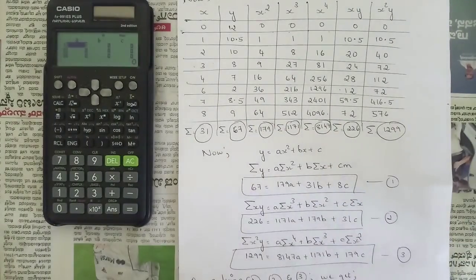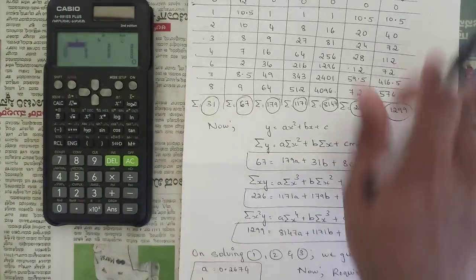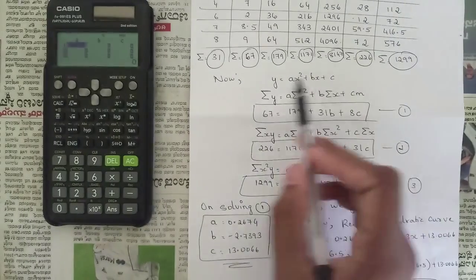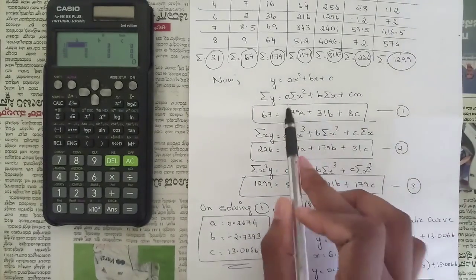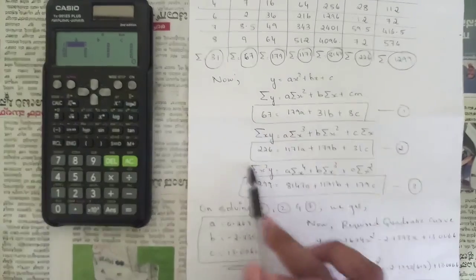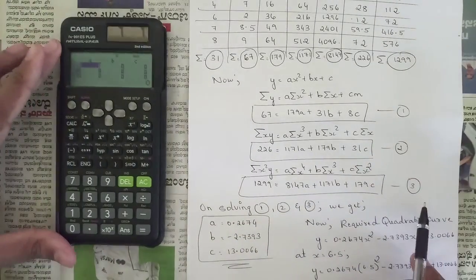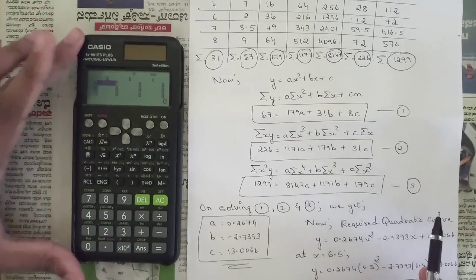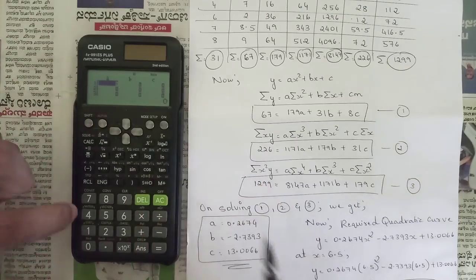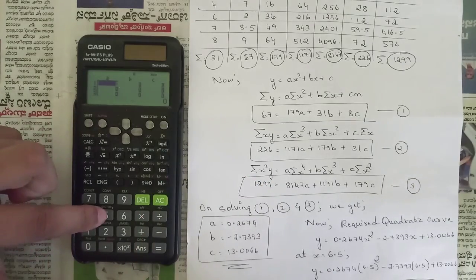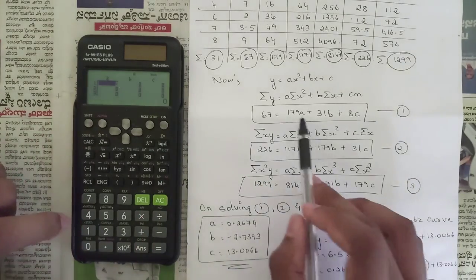We take the above three sets of equations, substitute the summation values, and get three equations — name them equation 1, 2, and 3. In the calculator, press Mode/Setup, it asks for equations — press number 5. Since we have three parameters a, b, c, press number 2.